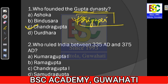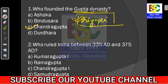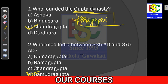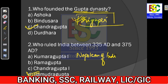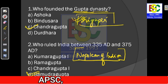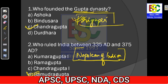Question number two: Who ruled India between 335 AD and 375 AD? The answer should be Samudragupta. He was the successor of Chandragupta and one of the most powerful kings of the Gupta dynasty. He was also known as the Napoleon of India, because rarely did he ever lose a battle. The answer for question number two is option D — Samudragupta.